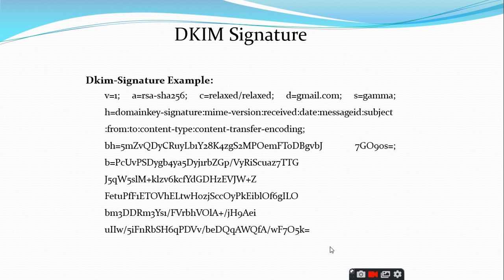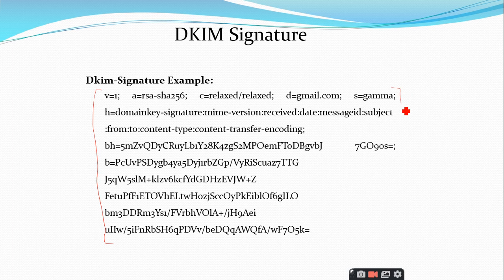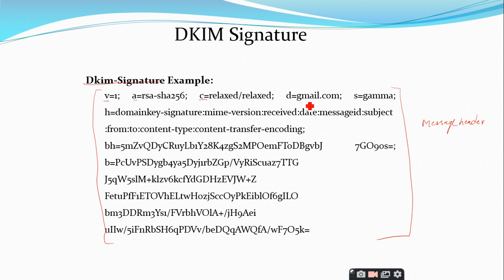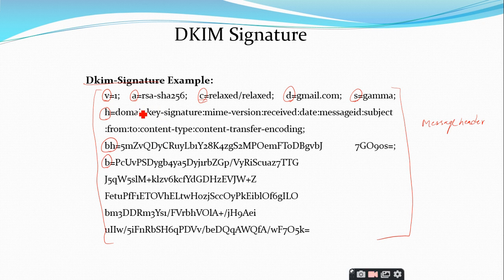Finally, let us see what the DKIM signature looks like. The signature is inserted into the RFC 5322 message as an additional header entry. It consists of different fields: v, a, c, d, s, h, bh, and b — we will discuss each of these. You can view this from your own incoming mail by using 'view long headers,' which shows all this information.